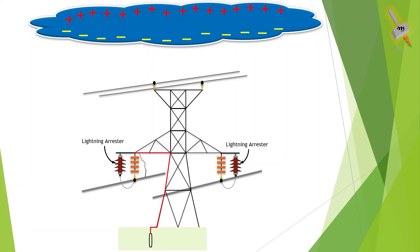There is another scenario where due to the mutual coupling of the transmission lines surge voltage gets induced in another conductor. Such induced overvoltage also needs to be grounded and yet again the job is done by the lightning arrester.